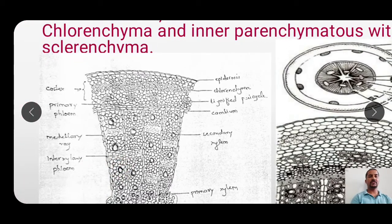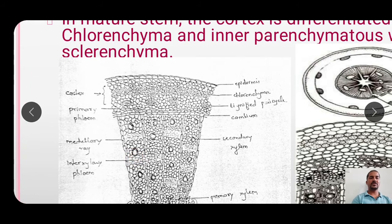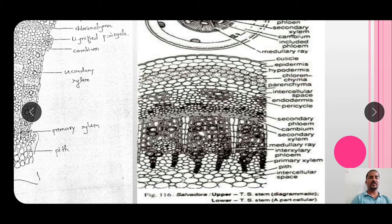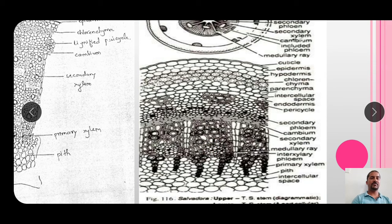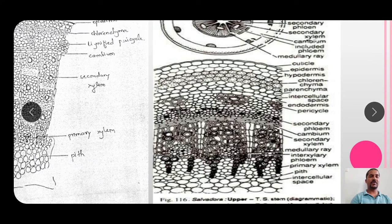Here I will magnify the diagram, and you can see these are the patches of the interxylary phloem. In this second diagram you can see these are the secondary phloem patches produced in the secondary xylem, which is called the interxylary phloem. The secondary phloem is produced towards the outer side of the cambium in a normal way. Here you can see this is the cambium, and towards the outer side of the cambium the secondary phloem is produced normally.